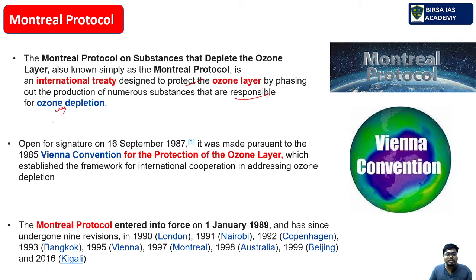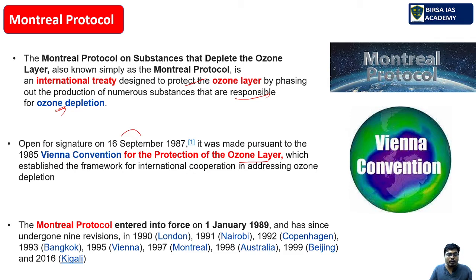The Montreal Protocol controls the substances responsible for ozone depletion by phasing out their production. The Montreal Protocol opened for signature on 16 September 1987. It was made pursuant to the 1985 Vienna Convention for the Protection of the Ozone Layer, which it essentially substitutes and complements. It is the universally ratified treaty in United Nations history — all countries ratified both the Montreal Protocol and the Vienna Convention.